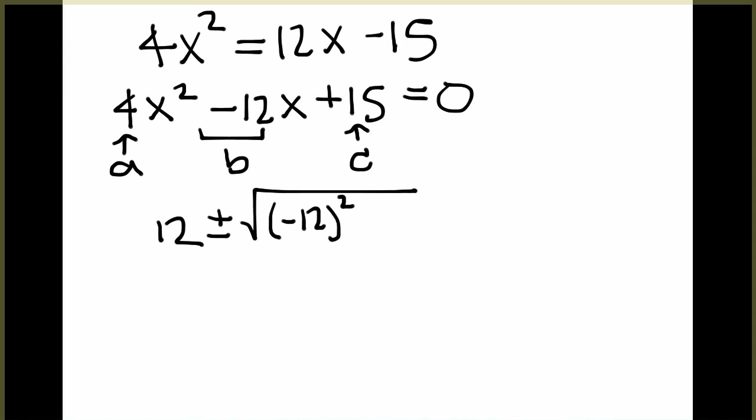which in our case is negative 12 squared, minus 4 times a, a is 4, times c, c is 15. And this entire part is divided by 2a. In this case, 2 times 4.